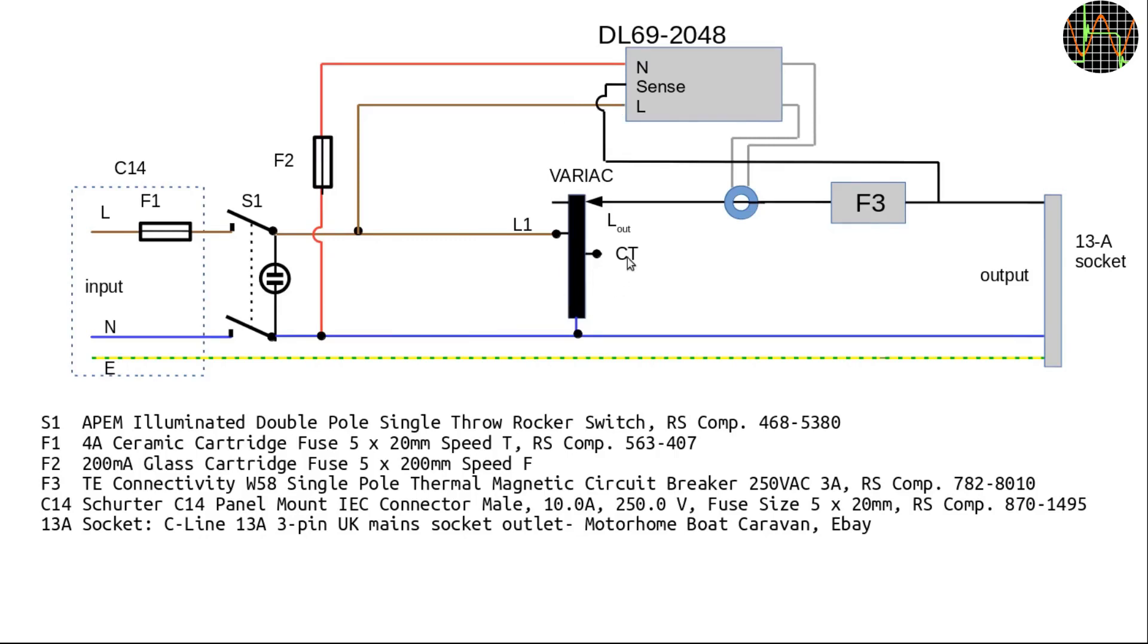In the center we have of course the VARIAC itself. The output of the VARIAC goes through the current transformer of the panel meter and then through fuse F3 before being connected to the output socket and measured by the sense input of the panel meter. That way if F3 goes, the voltage shown on the panel meter will also drop to zero.